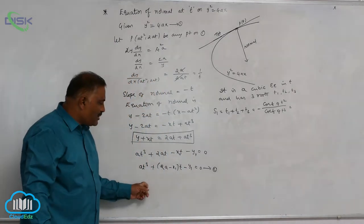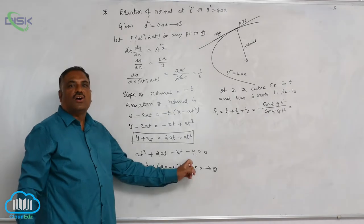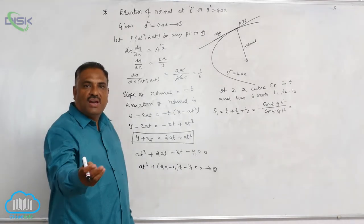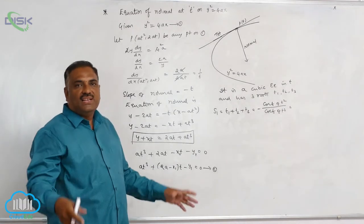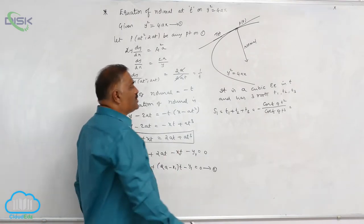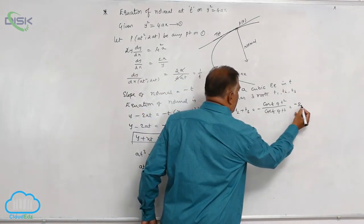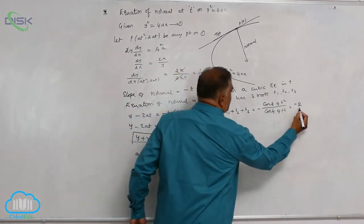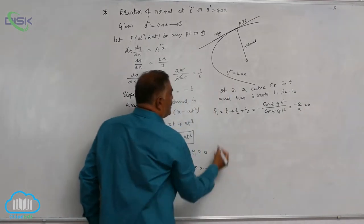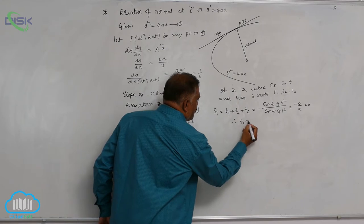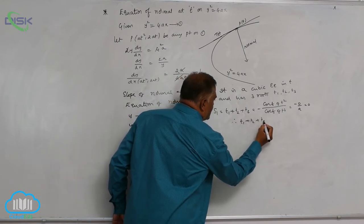What is the meaning of s1 from theory of equations? Sum of the roots taken one at a time. That means t1 plus t2 plus t3 is equal to minus coefficient of t square divided by coefficient of t cube. Now we observe that in this equation, t cube term is there, t is there, constant is there, t square term is missing. If it is missing, assume that coefficient is 0. So minus 0 divided by a. That is why it is 0. So t1 plus t2 plus t3 is equal to 0.